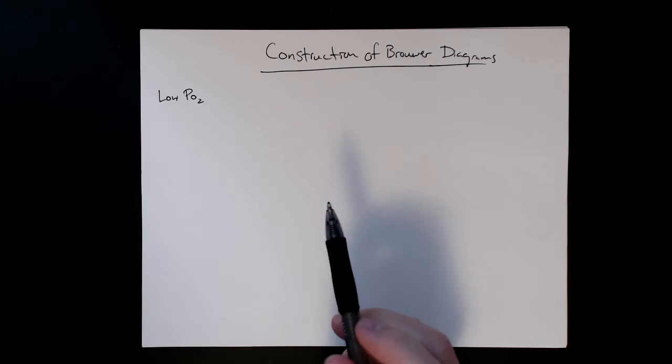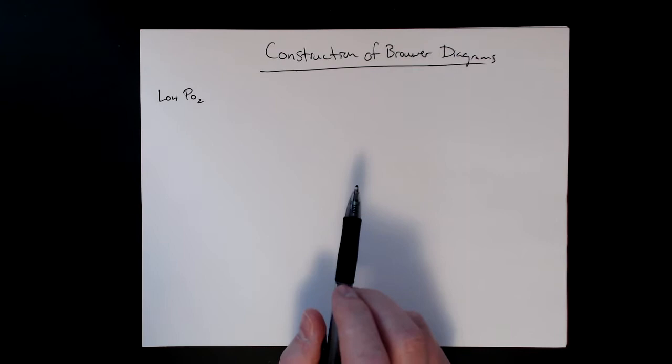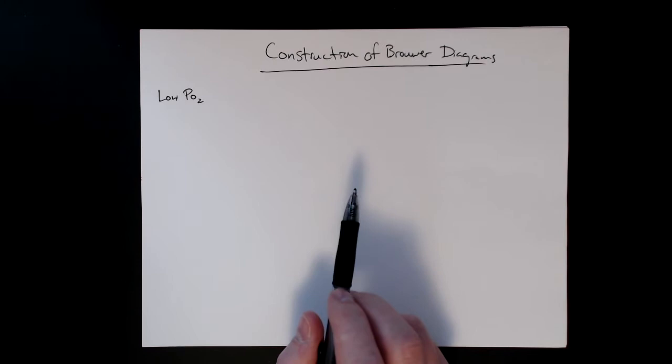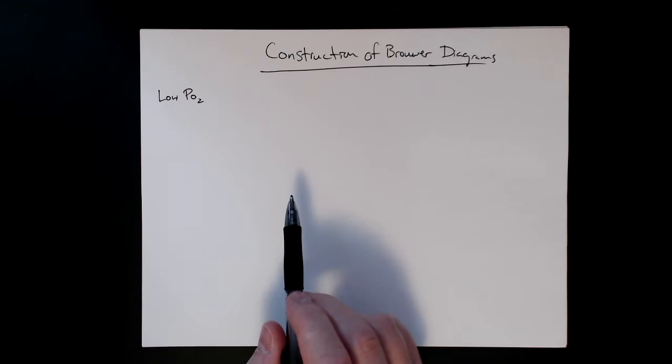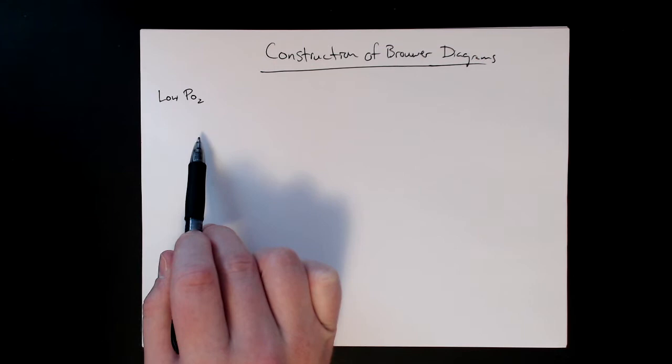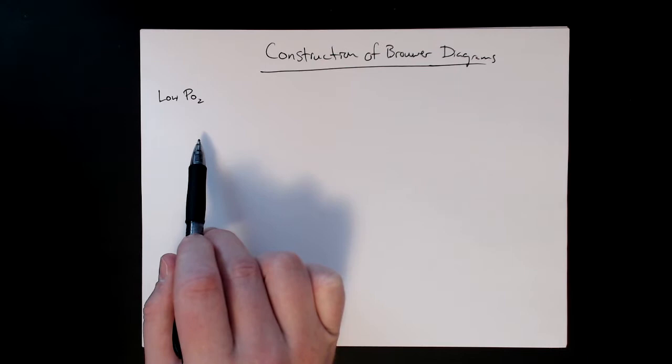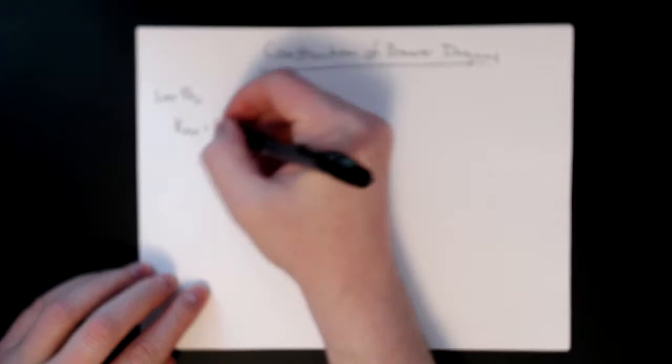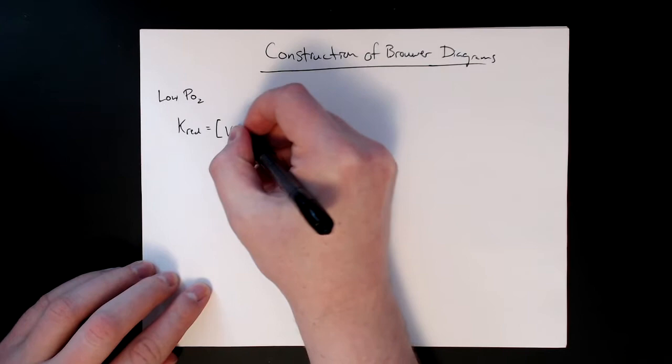In the next few modules we're going to construct the Brouwer diagram that we've been building up information for over the last several modules. We're going to start with the low pO₂ region. In this region we expect oxygen vacancies and electrons to be the dominant species, and our reaction for that — which I'll repeat here — is the mass action expression for a reduction.